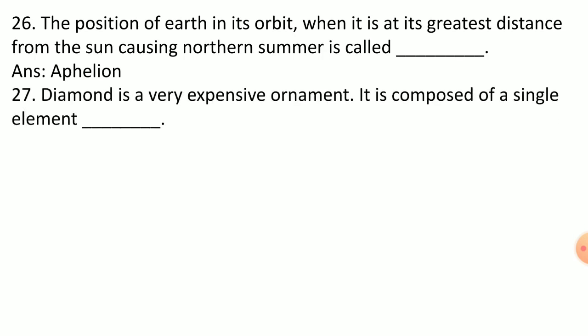Diamond is a very expensive ornament. It is composed of a single element, carbon. Diamond is a carbon allotropic form. The two other allotropic forms are graphite and buckyballs.